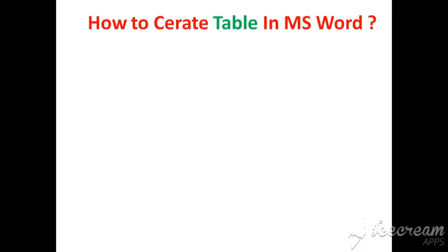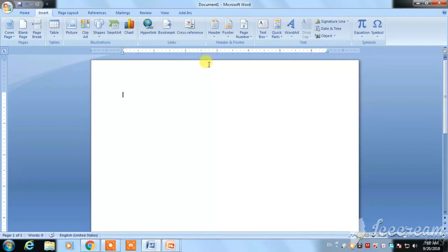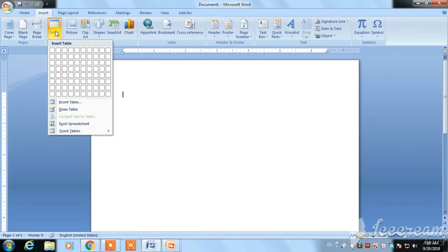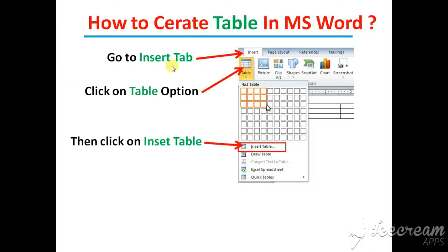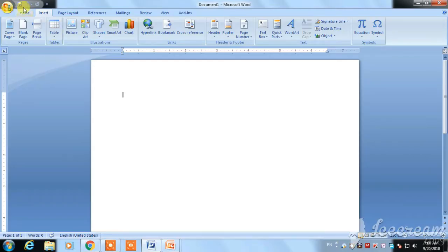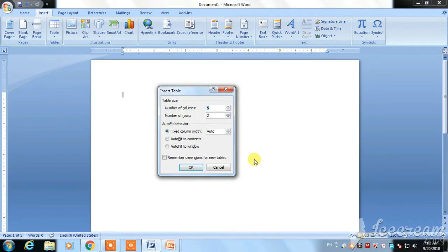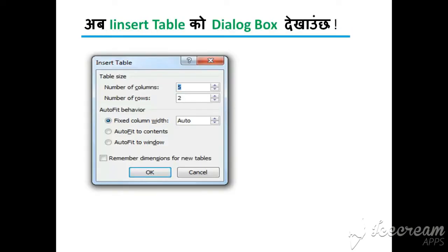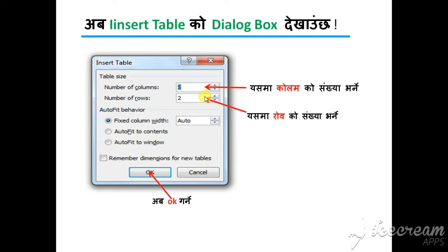Now we have to learn how to create a table in MS Word. Click on the Insert tab and then click on the Table option. I will select the table option.